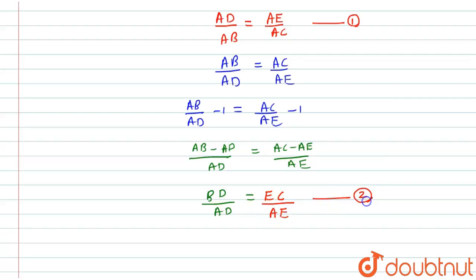Now by looking at equation number 1 and equation number 2, it is proved that if a line is drawn parallel to one side of the triangle intersecting the other two points, then it divides the two sides in the same ratio. Hence it is proved.